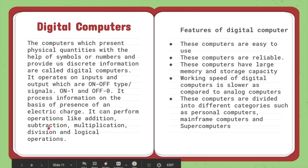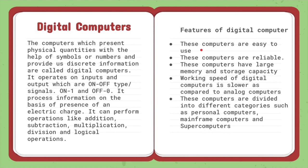Digital computers perform operations like addition, subtraction, multiplication, division, and logical operations. Features of digital computers: these computers are easy to use and reliable — unlike analog computers. They have large memory and storage capacity. The working speed of digital computers is slower compared to analog computers. These computers are divided into different categories such as personal computers, mainframe computers, and supercomputers, which we will read about later in this video.